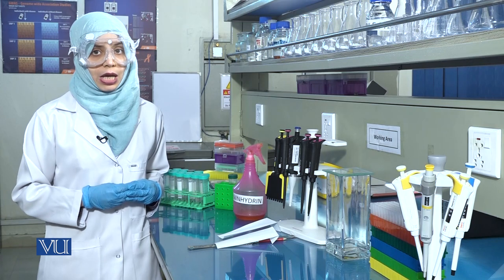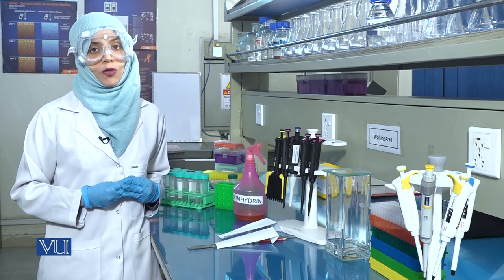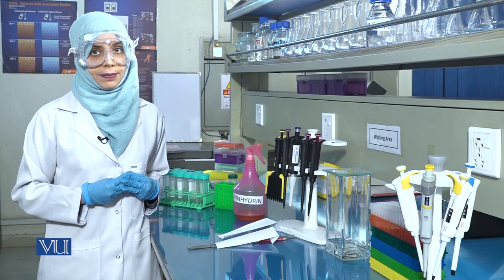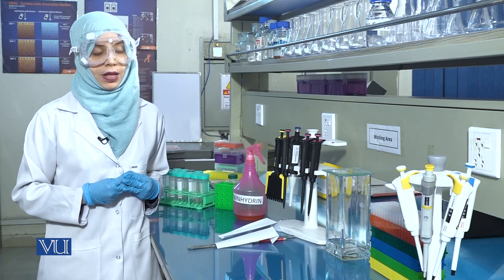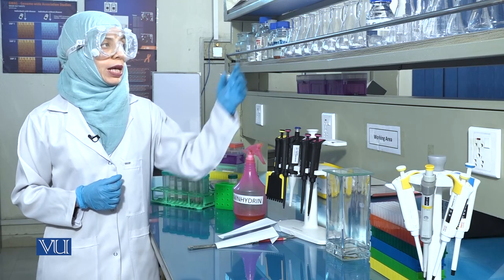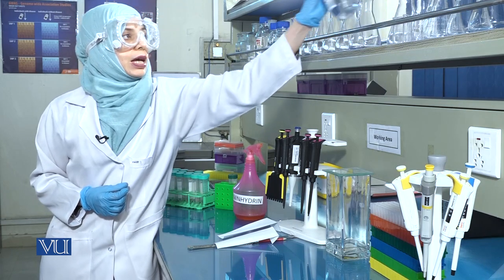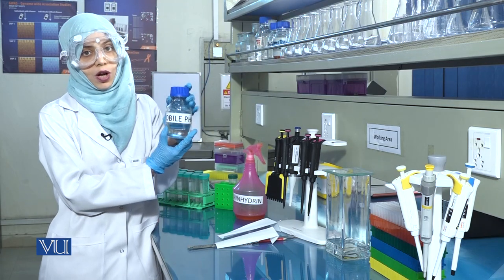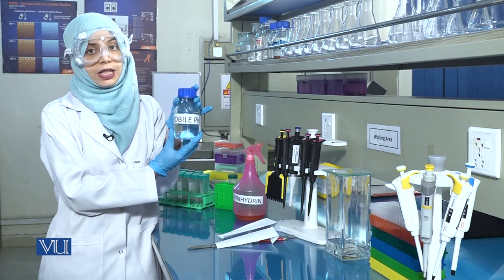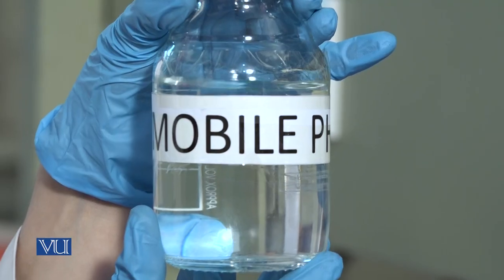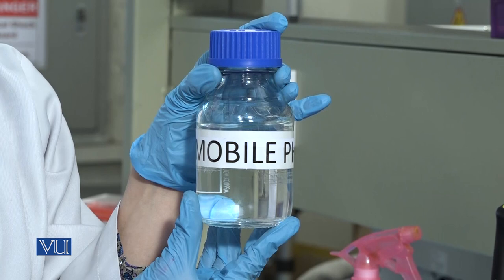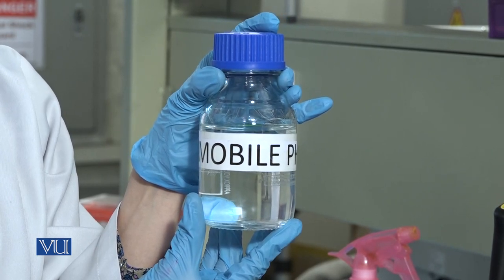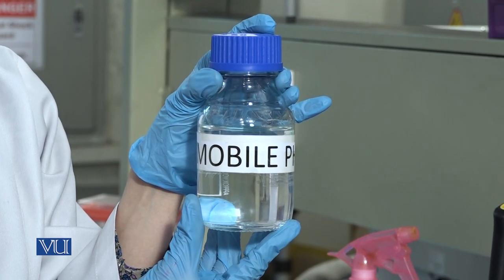Today, we will be performing the paper chromatography of amino acids. To begin with, we will take the mobile phase or the organic solvent, which contains butanol, acetic acid, and water in the ratio 60, 15, and 25.